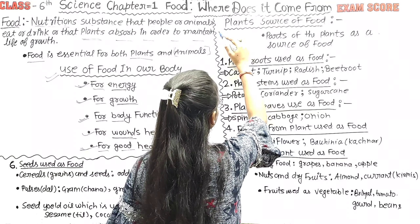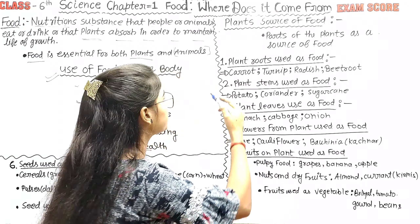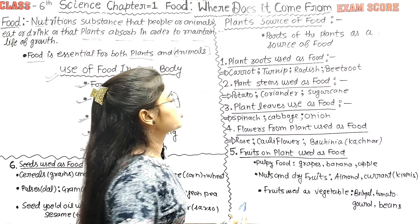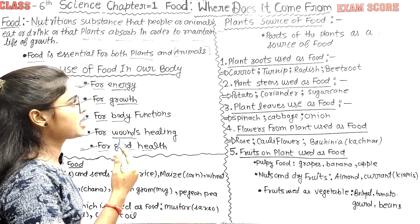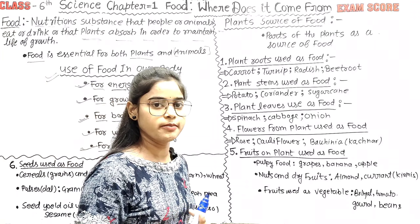How does food come to us? The first point is the plant source of food. There are two parts: plant source of food and animal source of food.